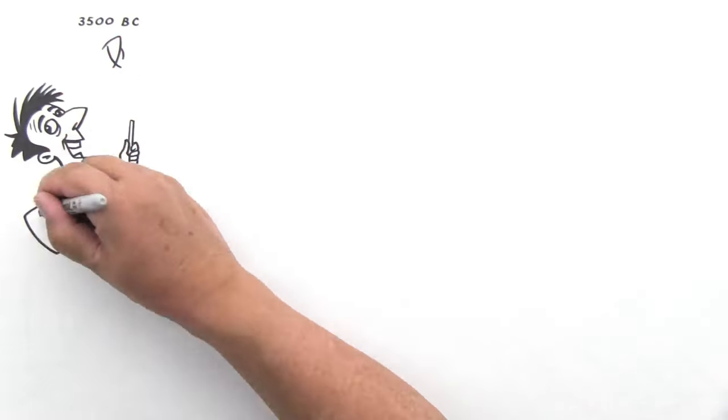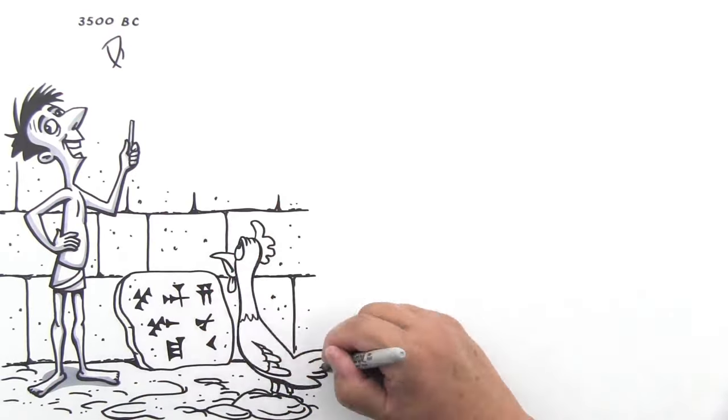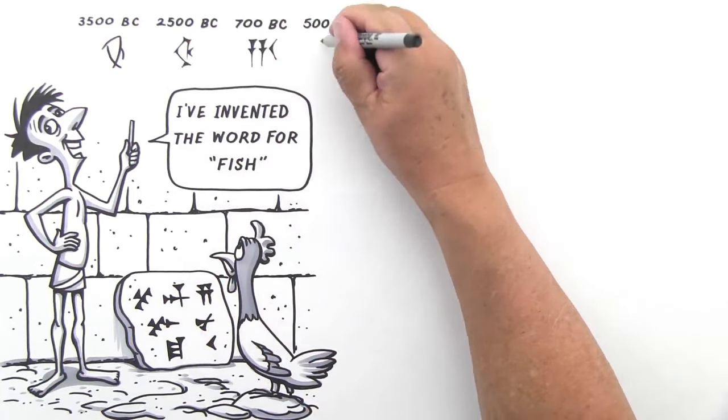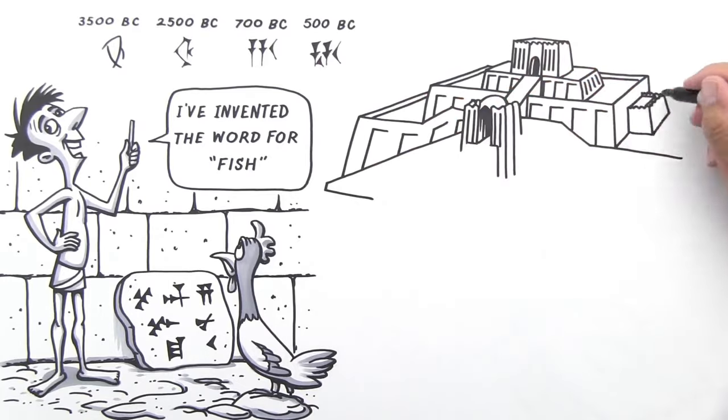In Mesopotamia, they invented the first written language called cuneiform. They started with pictographs, but over time, the writing evolved into more abstract symbols. They also got to invent cool names for their buildings like ziggurat.